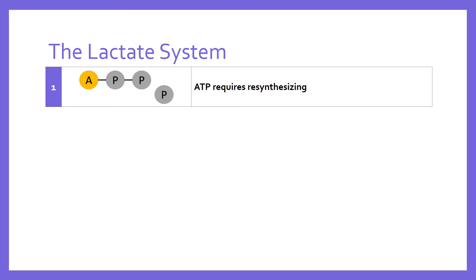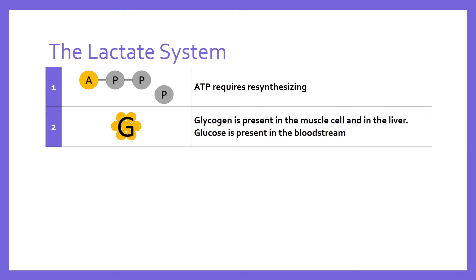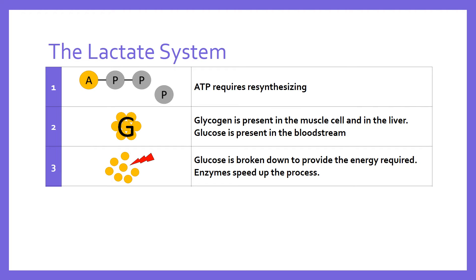So how does the lactate system actually work? Beginning from the point where ATP requires resynthesizing, this system uses glucose — a fairly simple sugar present in the bloodstream — and also glycogen, the stored form of glucose, which is present in both the muscle cell and the liver. So we have three places to get glucose from for glycolysis: the bloodstream, the liver, and the muscle cell itself. Glucose or glycogen is then broken down with the help of certain enzymes which speed up the process, and the energy released is used to resynthesize ATP.